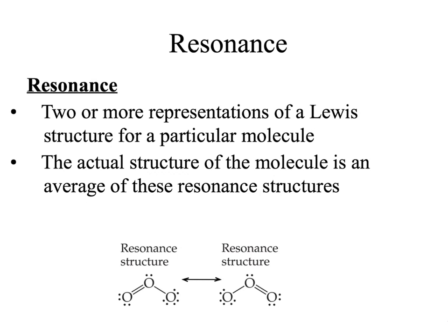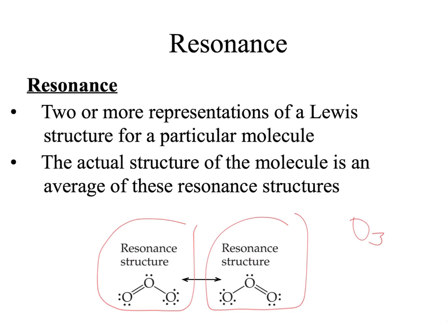Now we're going to talk about something called resonance. Resonance is when you can have two or more representations of a Lewis structure for a particular molecule, and the actual structure is an average of these structures. We'll look at ozone — O3 — as an example. Ozone has two possible structures. A double bond will be shorter than a single bond because there's more electron attraction, so there's more force holding the atoms together closely.